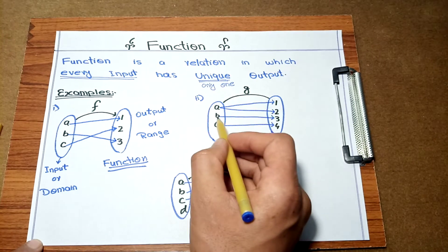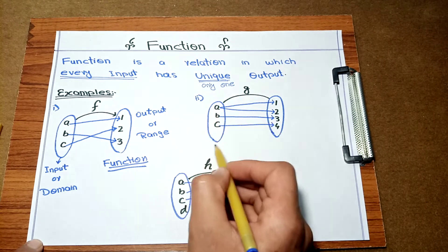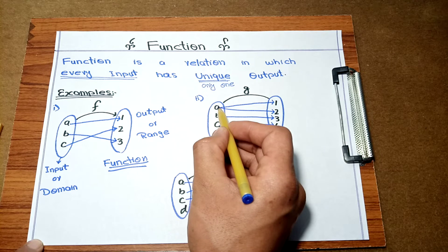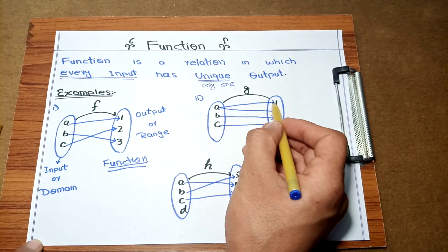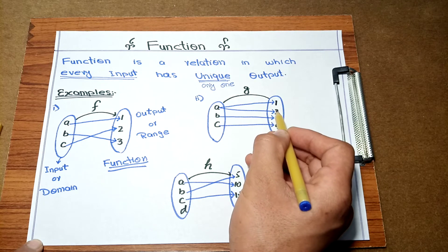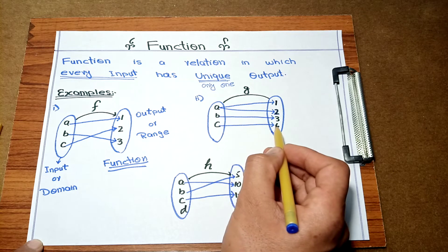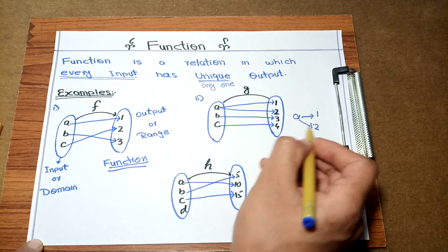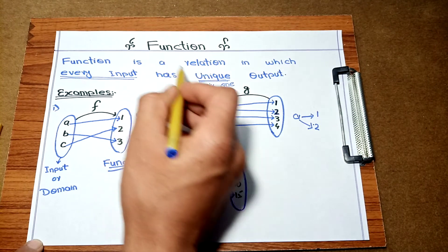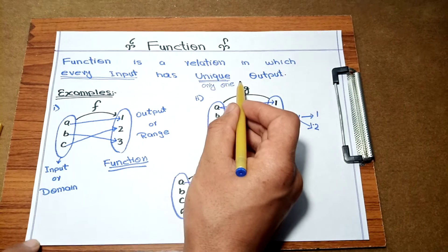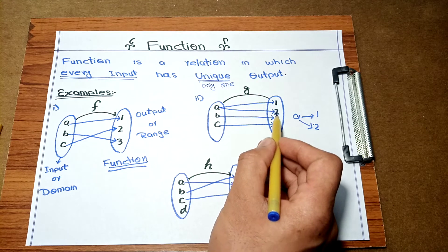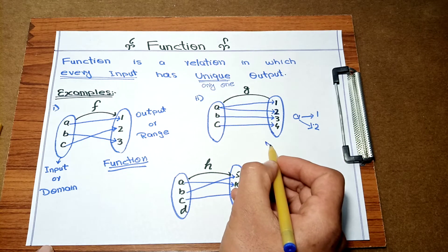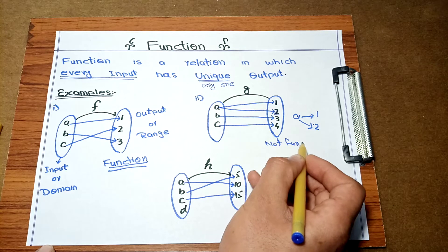In example 2, this is function G. A, B, and C are inputs. But here, A has two outputs: 1 and 2. B has output 3 and C has output 4. Since A has two outputs, and the definition requires a unique output for every input, this is not a function.